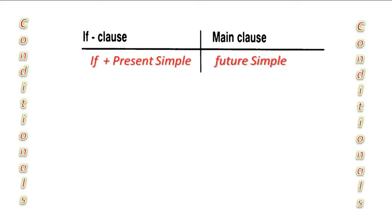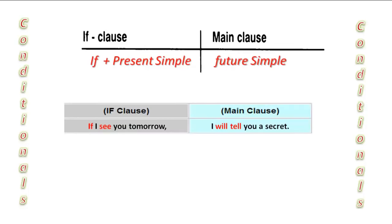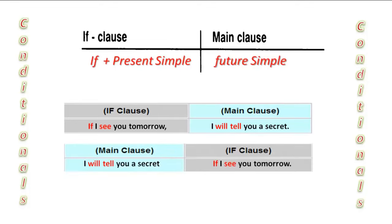This is the basic usage. If I see you tomorrow, I will tell you a secret. Be careful: if the if-clause comes first, you should put a comma between the two clauses. But if you begin with the main clause, no comma is necessary. I will tell you a secret if I see you tomorrow.